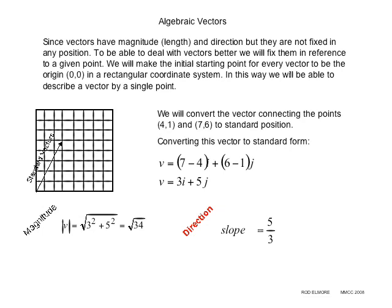Now we want to get the direction. The direction is the slope. So the slope of this vector is 5 thirds. So slope will give us direction. The length will give us the magnitude.